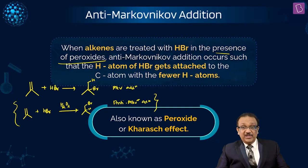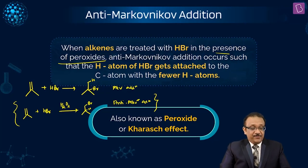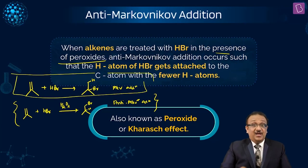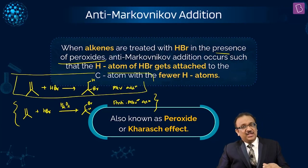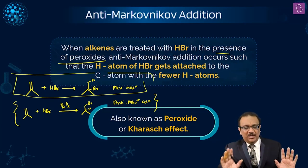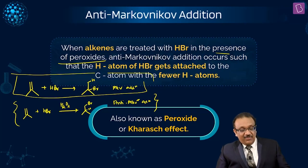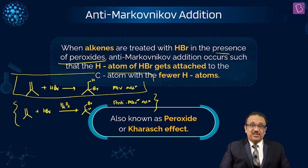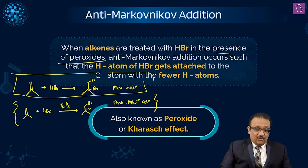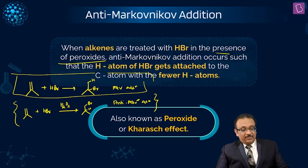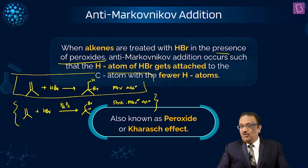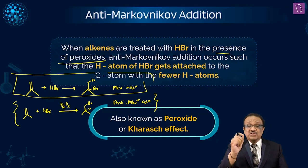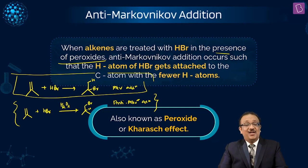Important: this does not happen with HCl or HI — only with HBR. The first reaction, Markovnikov Addition, works fine with HCl, HBR, and HI. But the Kharasch Effect — Anti-Markovnikov Addition — only HBR shows it. If you add peroxide with HI or HCl, the addition still follows Markovnikov's rule. The exception is only and only with HBR.